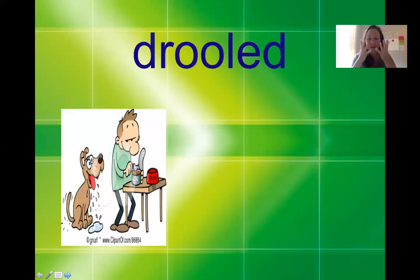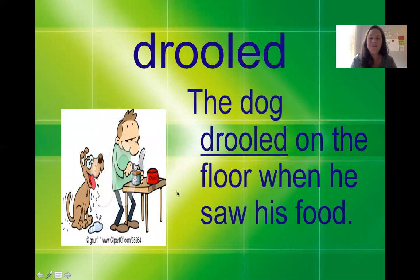Our next word is drooled. Look at that dog drooling. The dog drooled on the floor when he saw his food. Drooled means that saliva is dripping down your mouth. Sometimes if you're really hungry and you see something that makes your mouth water like this dog here, you might start to have saliva drip down your mouth. We know looking again at this sentence and the context clues that drooled is a verb. And that -ed is an inflectional ending that tells us that this verb is taking place in the past.